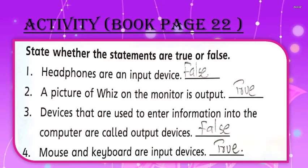Now it's time for the home task. There is an activity in your book on page number 22 — state whether the statements are true or false. Number one: headphones are an input device — that is false, because headphones are an output device; a microphone is an input device. Number two: a picture of ways on the monitor is output — that is true. Number three: devices used to enter information into the computer are called output devices — that is false; they are input devices. Number four: mouse and keyboard are input devices — that is true.